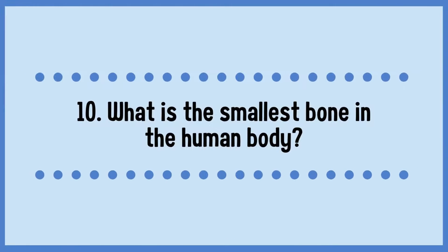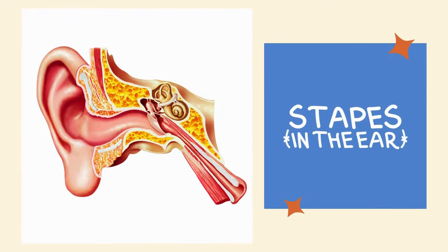What is the smallest bone in the human body? The answer is the stapes, located in the ear.